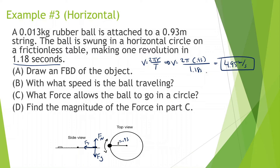What force allows the ball to go in a circle? That's going to be the force of tension. Without tension, this ball would not be going in a circle — it would fly off in a straight tangential direction. So without the string, without the force of tension, the ball is not able to go in a circle. The answer is the force of tension.